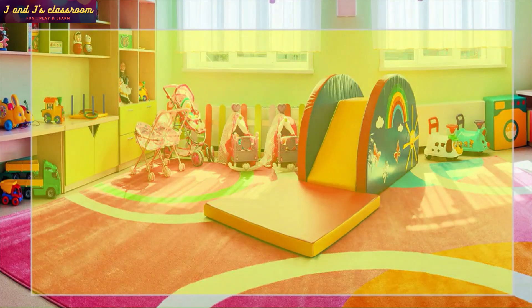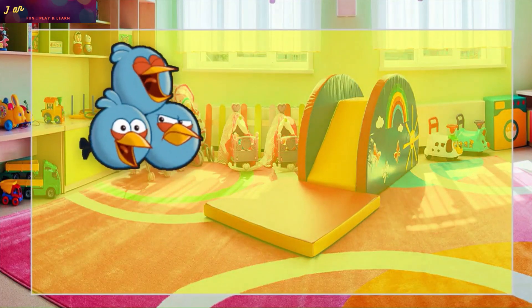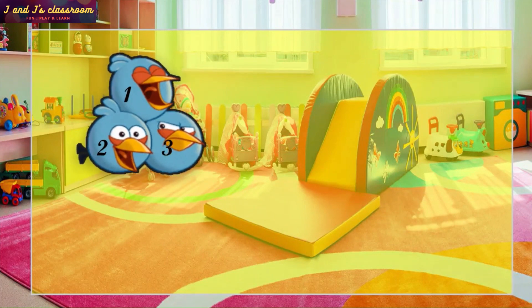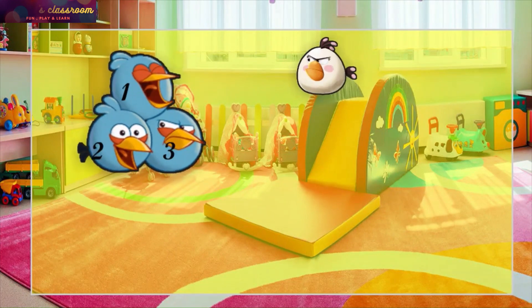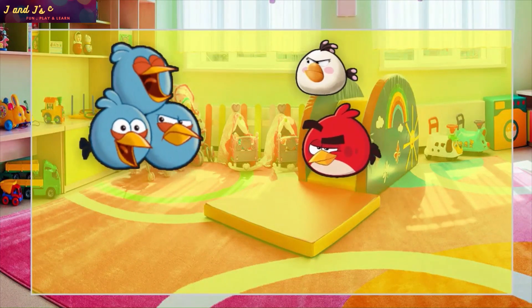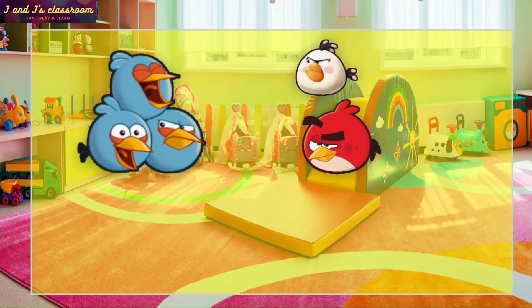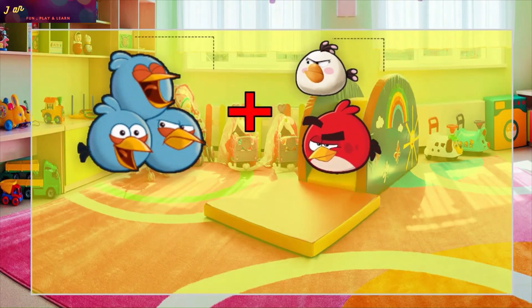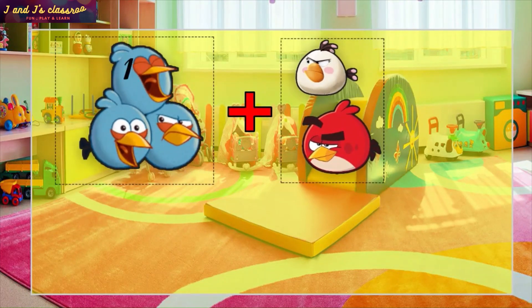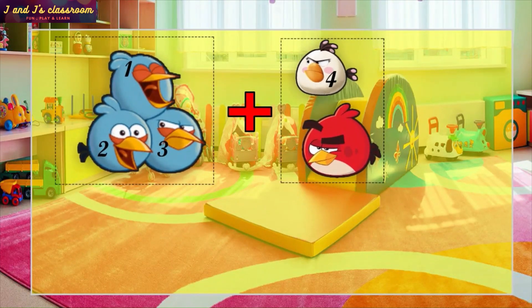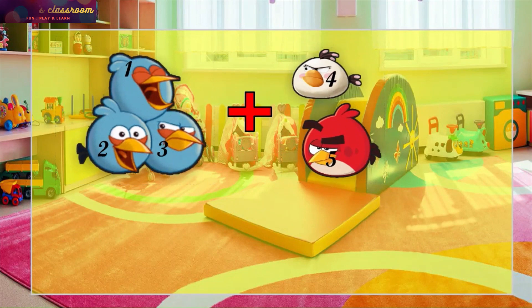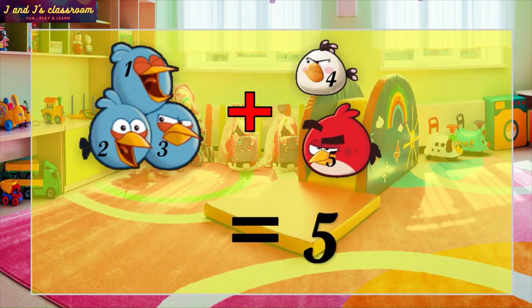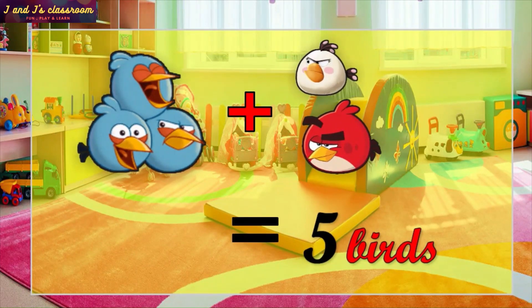Then the next example. There are five birds. If we add two more birds, then the total is? To find that, count all together: one, two, three, four, five. So the total answer is five birds.